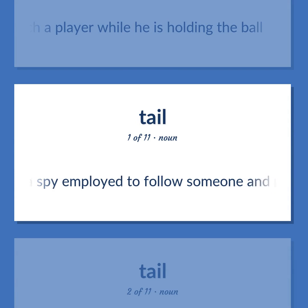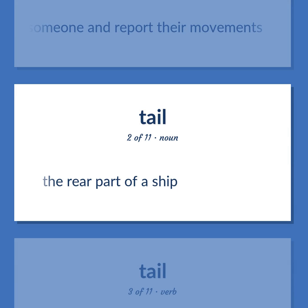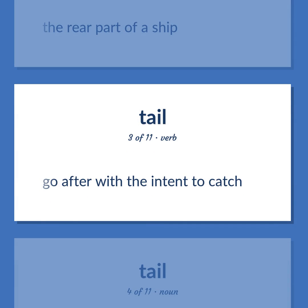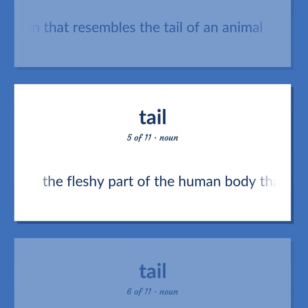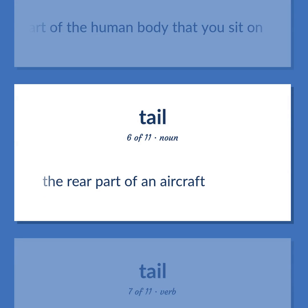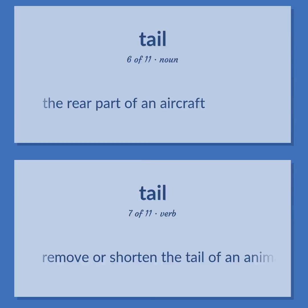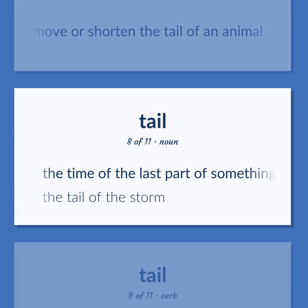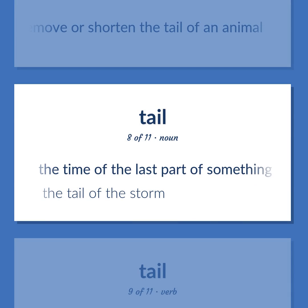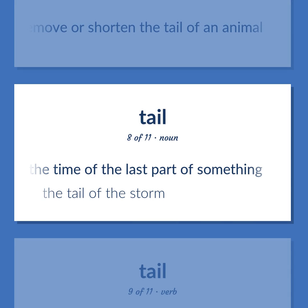Tail: A spy employed to follow someone and report their movements. The rear part of a ship. Go after with the intent to catch. Any projection that resembles the tail of an animal. The fleshy part of the human body that you sit on. The rear part of an aircraft. The time of the last part of something — the tail of the storm.